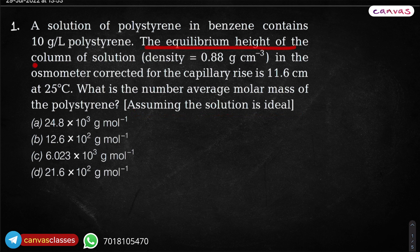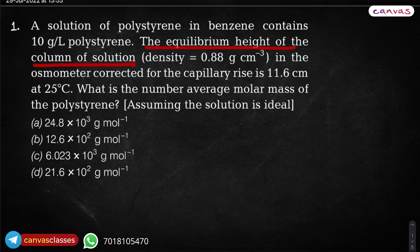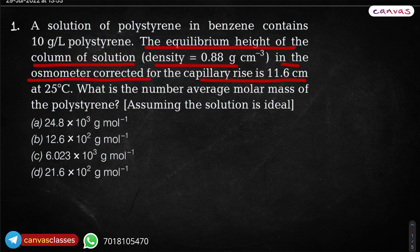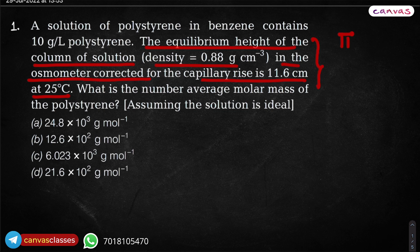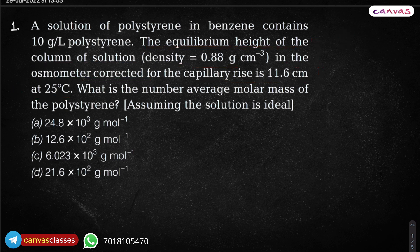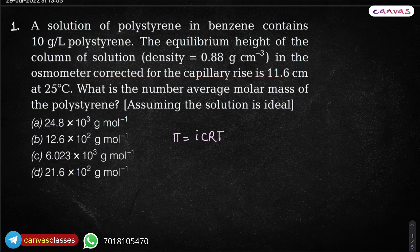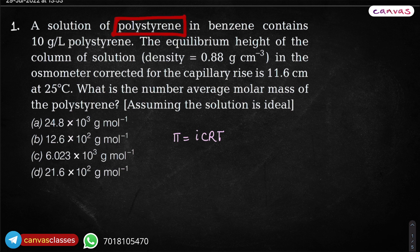Now, the equilibrium height of the column of solution, density of which is given to you, in the osmometer corrected for the capillary rise is 11.6 centimeter at 25 degrees Celsius. What is exactly this information? Why is it given to you? To calculate osmotic pressure. Through the osmometer, we can calculate π. How do we do that? We know that the formula of π is equal to iCRT. And because there is no association or dissociation shown by the solute, this polystyrene is not undergoing any kind of association or dissociation, so i is basically 1.